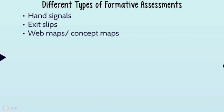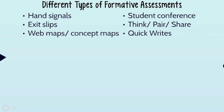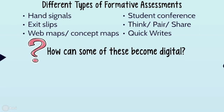Different types of formative assessments include good old-fashioned hand signals — thumbs up, thumbs down, or a scale of one to five. Hand signals are quick and easy. Exit slips are always pretty popular. Web maps or concept maps are useful — you have kids branch off from a central concept. Student conferencing is super important, especially in a flipped classroom; one-on-one face-to-face time helps you figure out where students are individually. Think-pair-share is always an oldie but a goodie, and there are also quick writes.